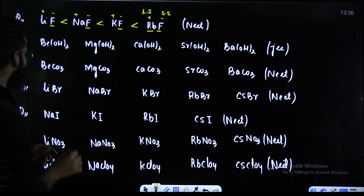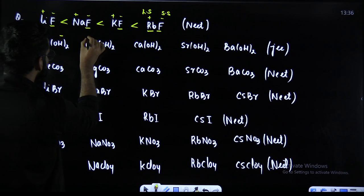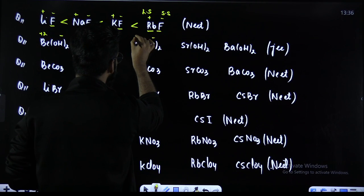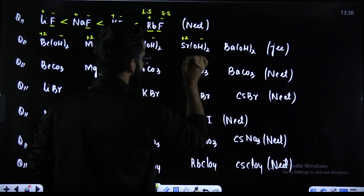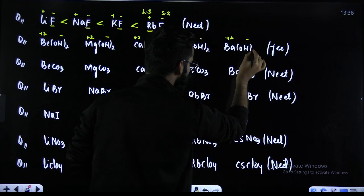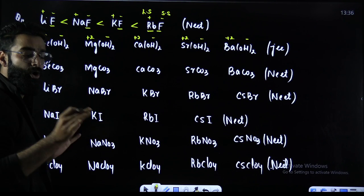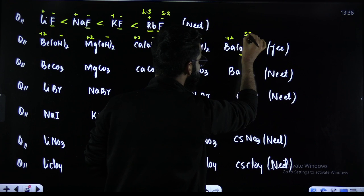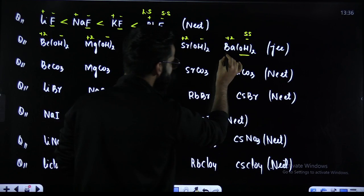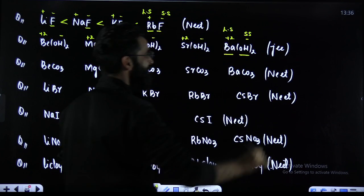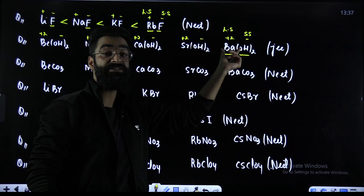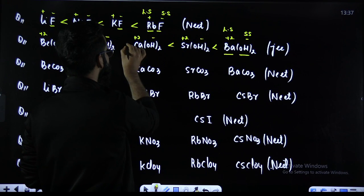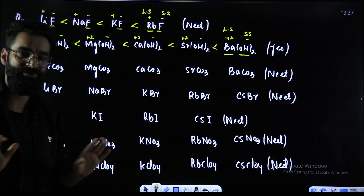Go to the second equation. We have Be(OH)₂, Mg(OH)₂, Ca(OH)₂, Sr(OH)₂, Ba(OH)₂. OH⁻ everywhere is common, and OH⁻ is a smaller sized anion. Among these cations, Ba²⁺ is the larger sized cation. So size difference is maximum there. More size difference, more is going to be the solubility — so that is the solubility order here. Done and dusted.